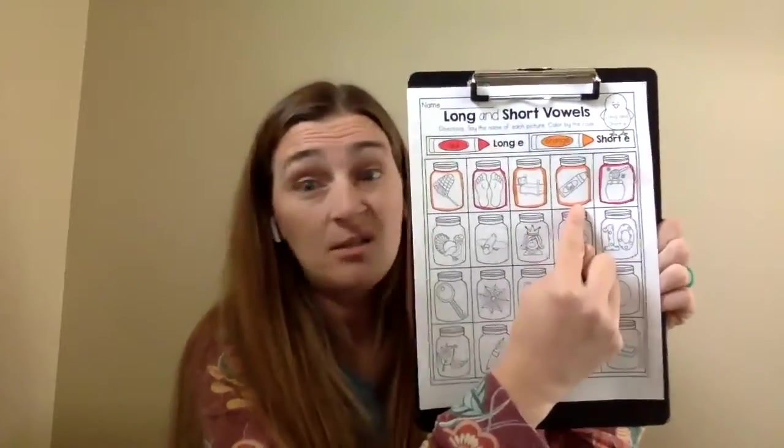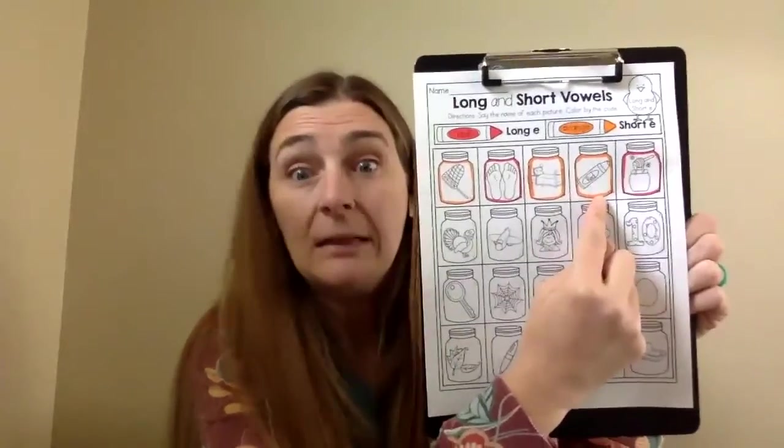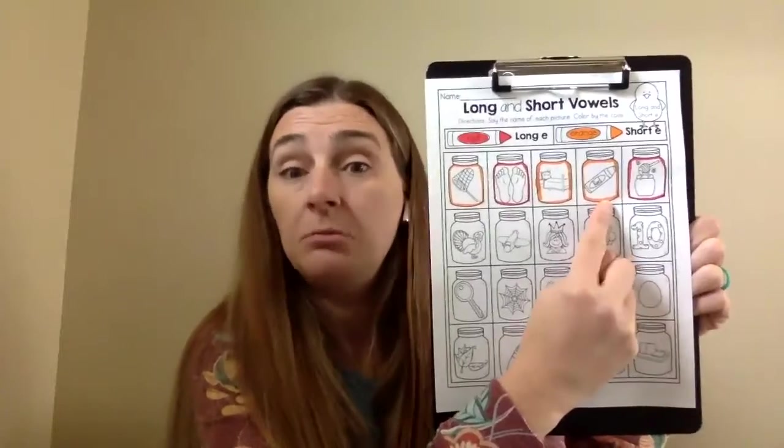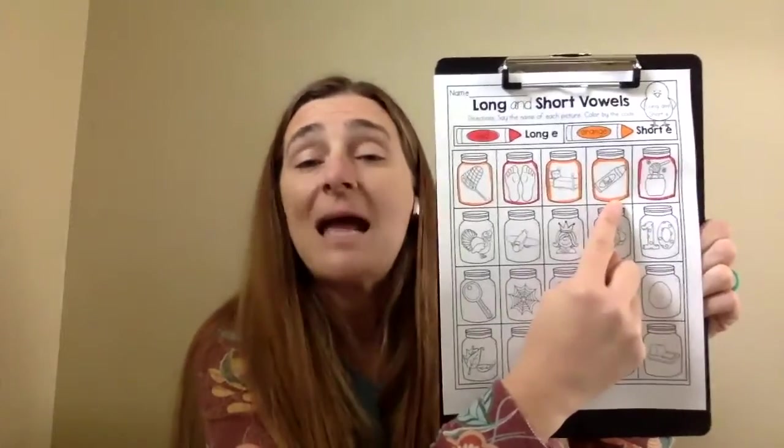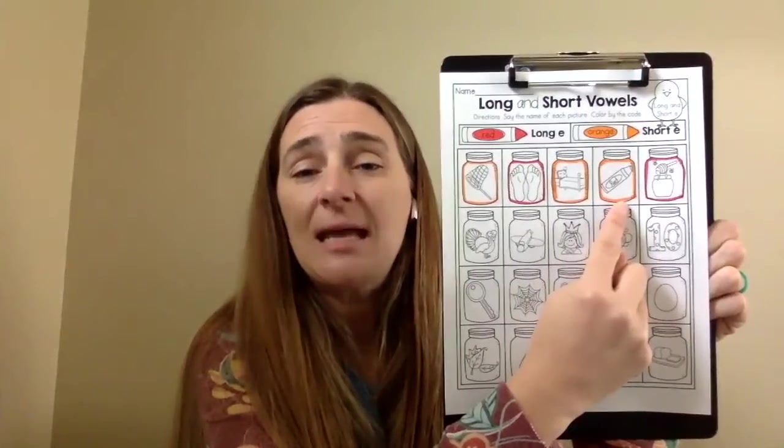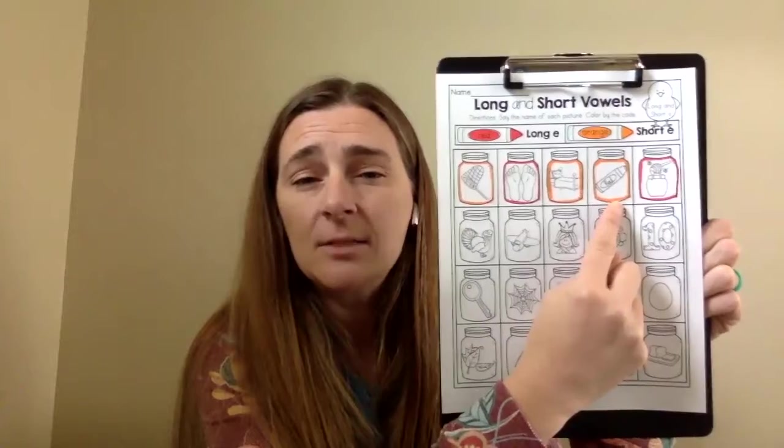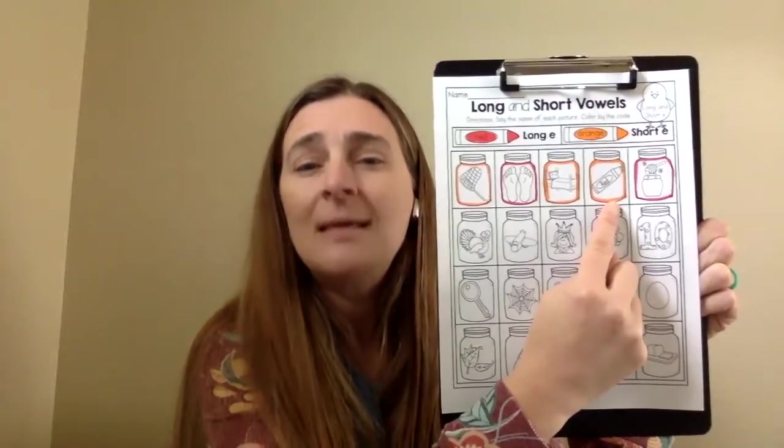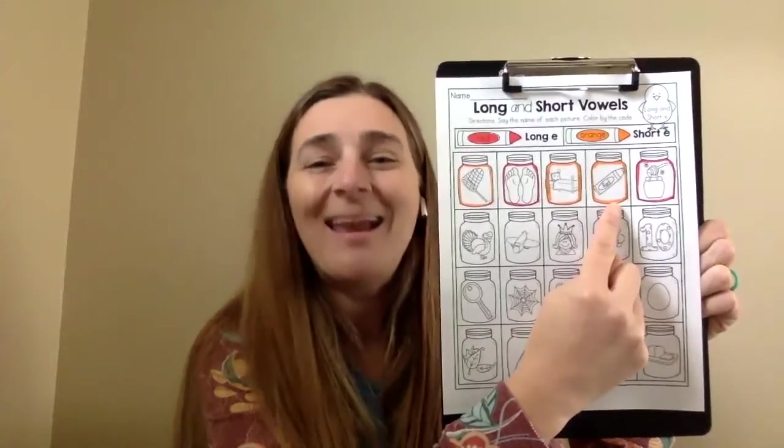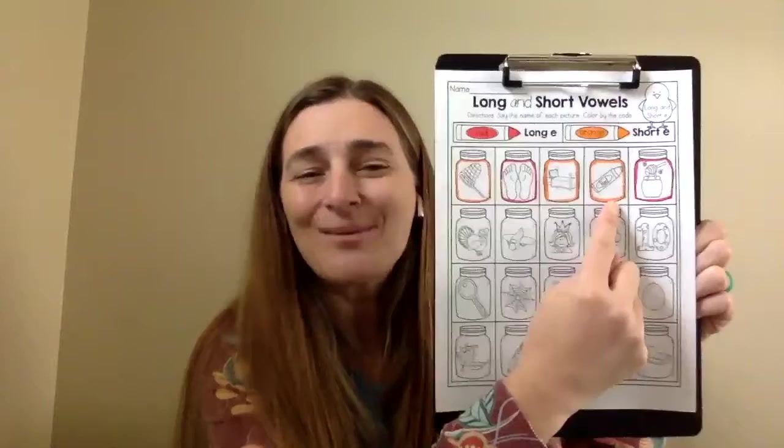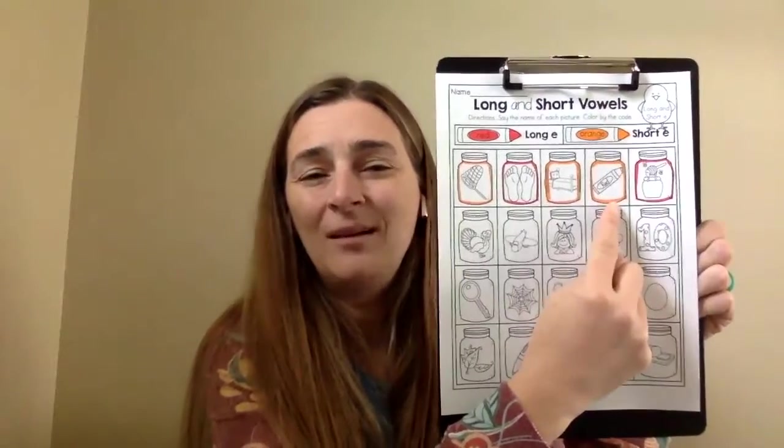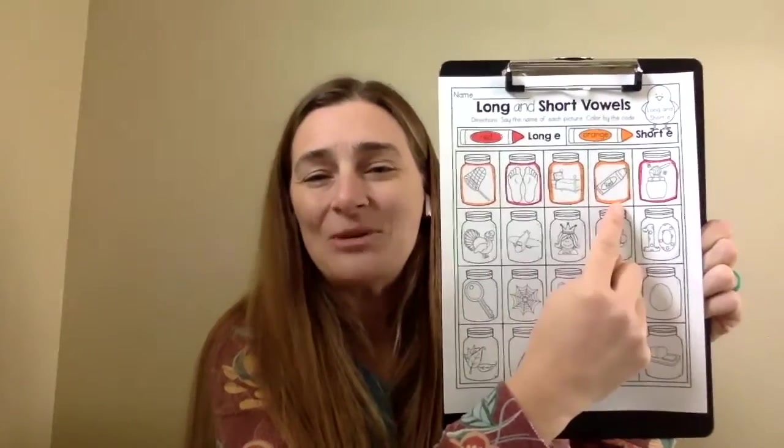The next picture isn't just a crayon. It's a red crayon. So let's say red together. Red, red, red. Let's see, E. Yes. E, like egg. Good job. So that's going to be orange.